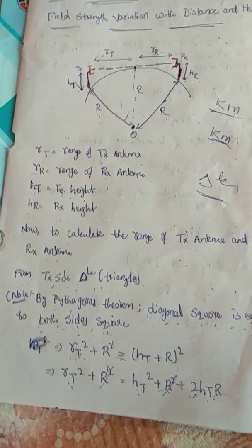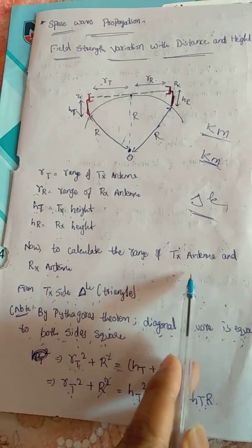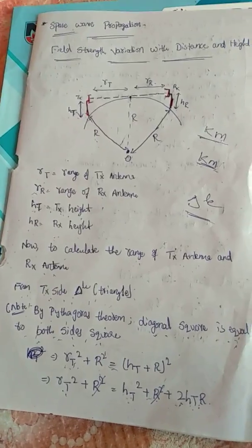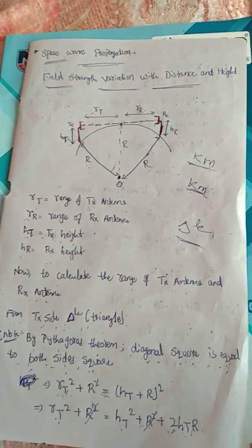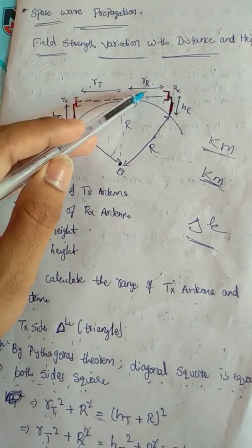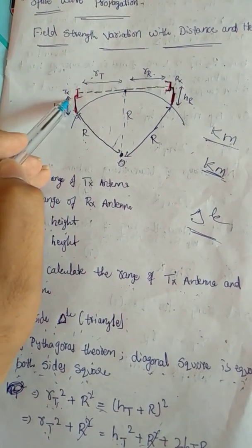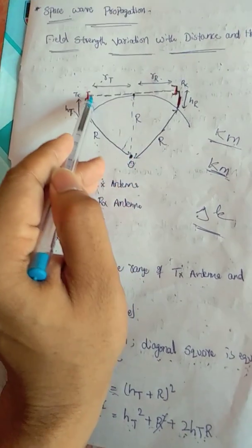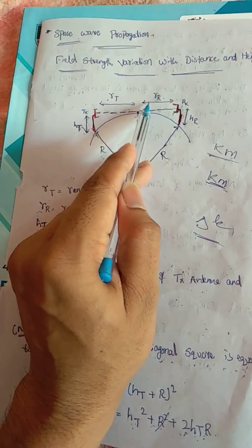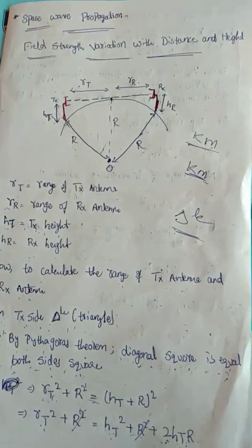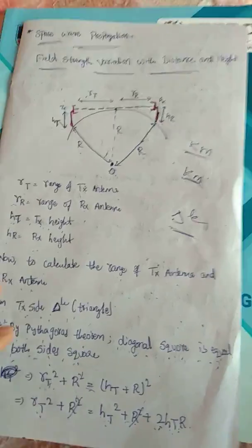In this concept we are going to calculate the range of the transmitter antenna and also the range of the receiver antenna. The primary aim is to estimate the range of the transmitter antenna RT and the range of the receiver antenna RR. RT is the distance from the center point of the surface to the transmitter, and RR is the distance from that point to the receiver.